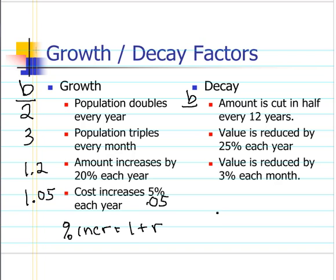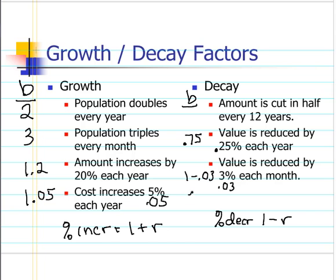For a percent decrease, we use the formula 1 minus r for our value of b. So for 25%, which is 0.25 as a decimal, we get 1 minus 0.25, which is 0.75. For 3%, that's 0.03, so 1 minus 0.03 gives us 0.97 as our b value.